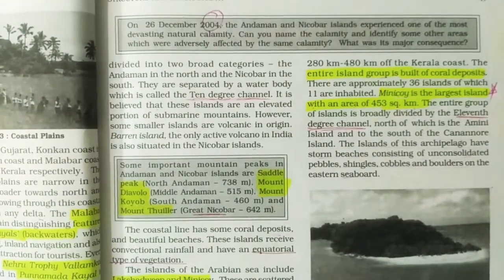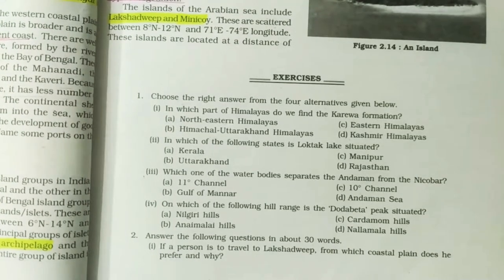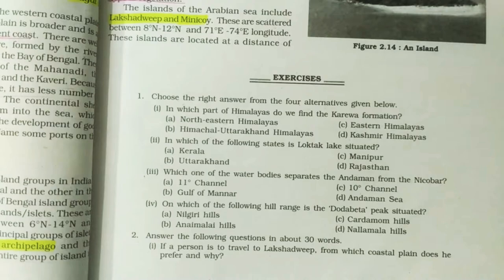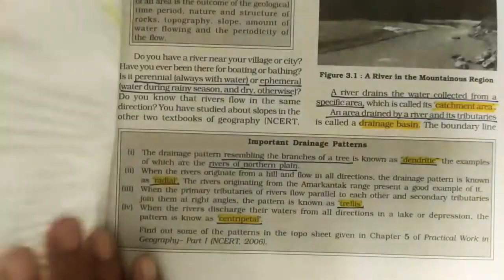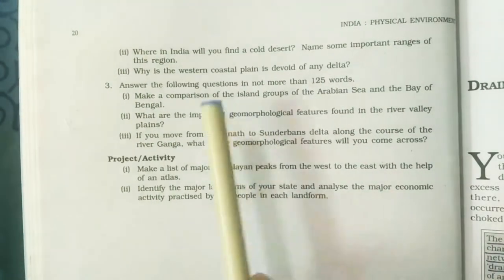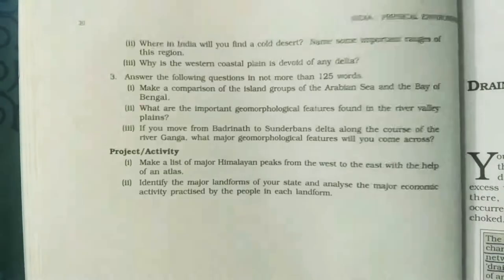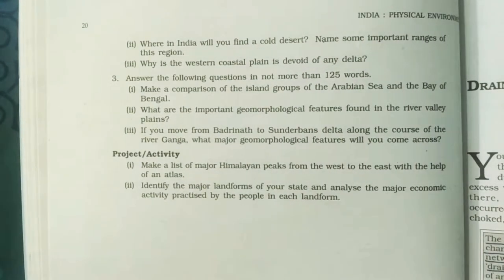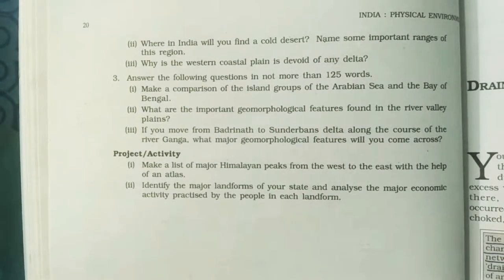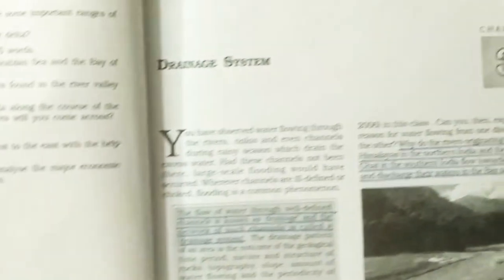We have now completed the Islands section and with it, the second chapter is complete. There are some exercises and MCQs in the chapter — when you read and review the chapter yourself, try to solve those questions in objective form. They are very helpful from an exam point of view. Also practice some answer writing. The next chapter — Chapter 3 — is the Drainage System, which we will cover in the next video. We will study rivers and tributaries there.